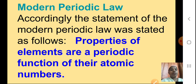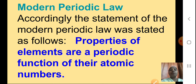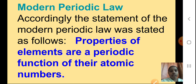Now the modern periodic law. According to the modern periodic law: the properties of the elements are the periodic function of their atomic numbers. So the law has been changed — atomic mass is not considered in the modern periodic law; instead, atomic numbers are considered.